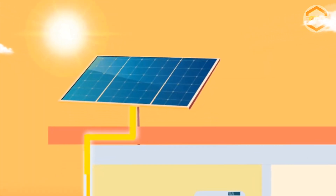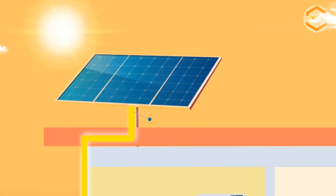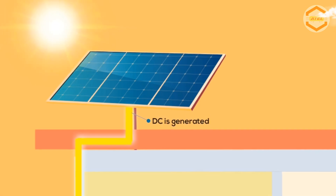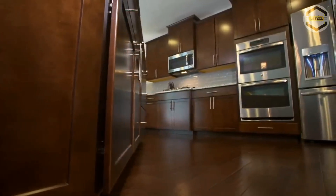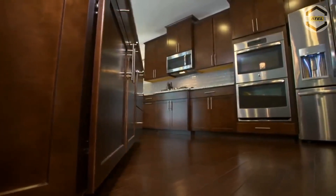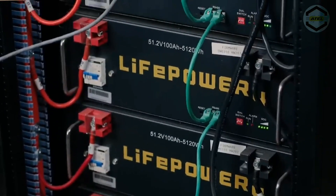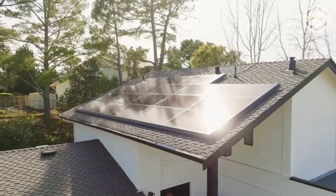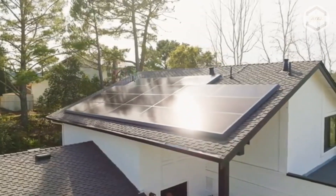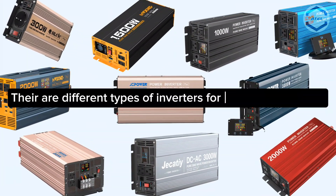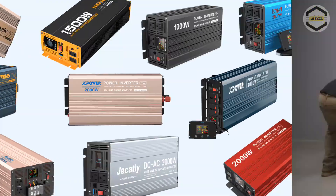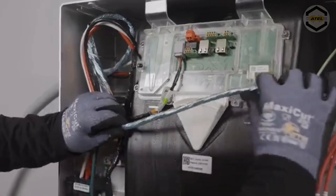An inverter is an electrical device that converts direct current or DC into alternating current or AC. This is important because most of the appliances we use at home run on AC power, but energy sources like batteries and solar panels produce DC power. But did you know there are different types of inverters for different purposes? Let's explore the main categories.